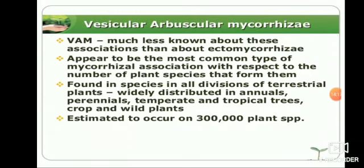Endomycorrhizae include vesicular-arbuscular mycorrhizae (VAM), which form special vesicle structures that penetrate inside the plant. VAM appear to be the most common type of mycorrhizae association with respect to the number of plant species that form them. They are found in species across all divisions of terrestrial plants, widely distributed in annuals, perennials, temperate and tropical trees, and crop and wild plants — estimated to occur on 3 lakh plant species.